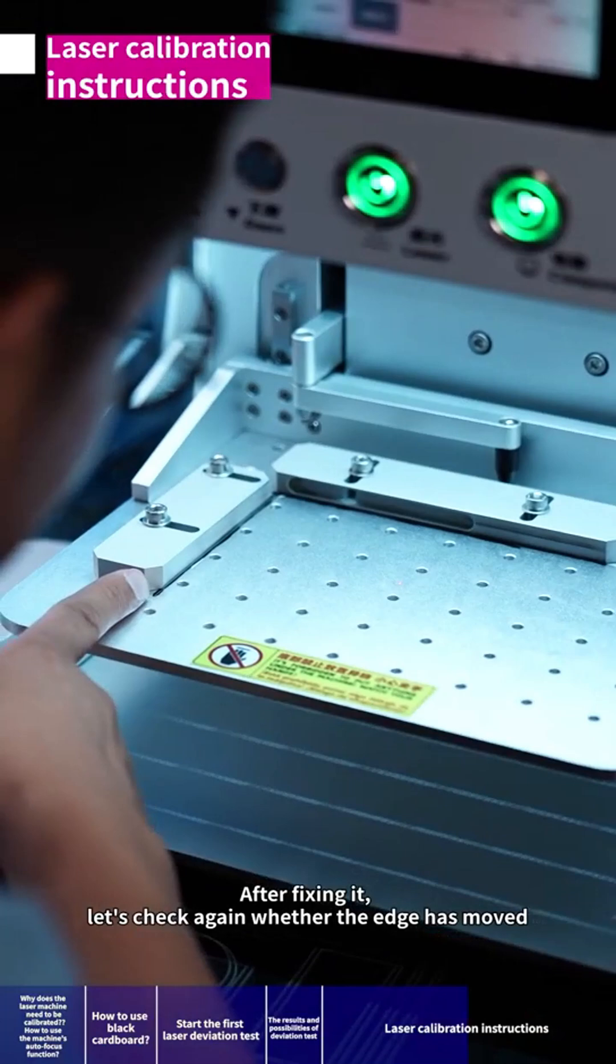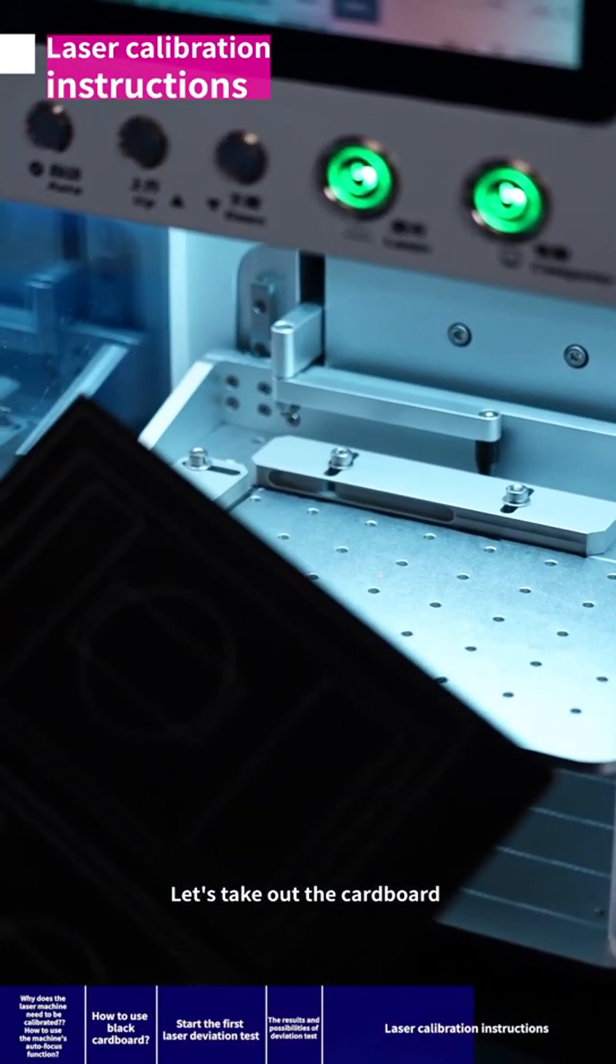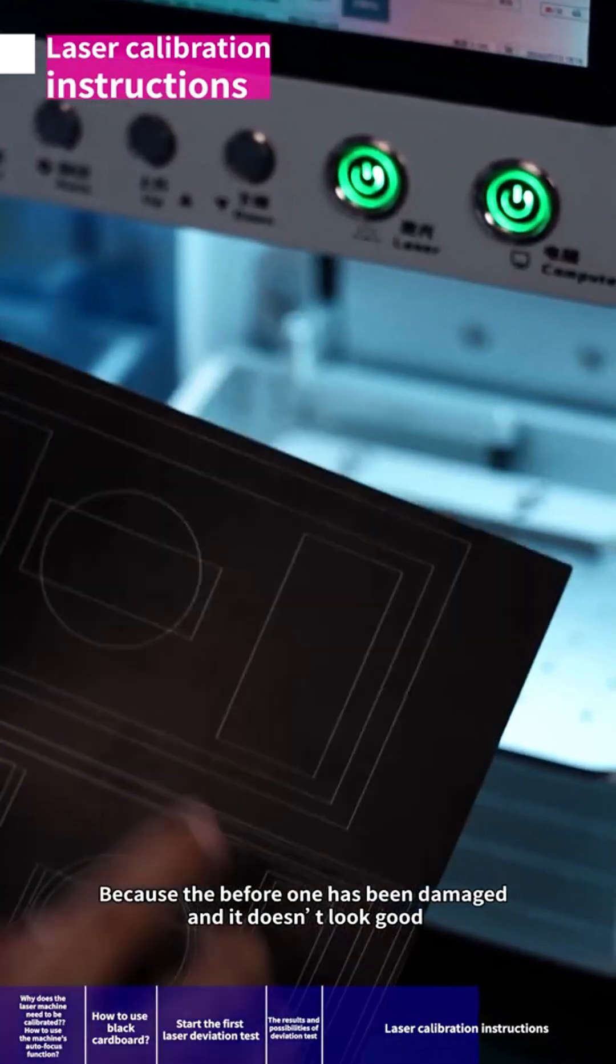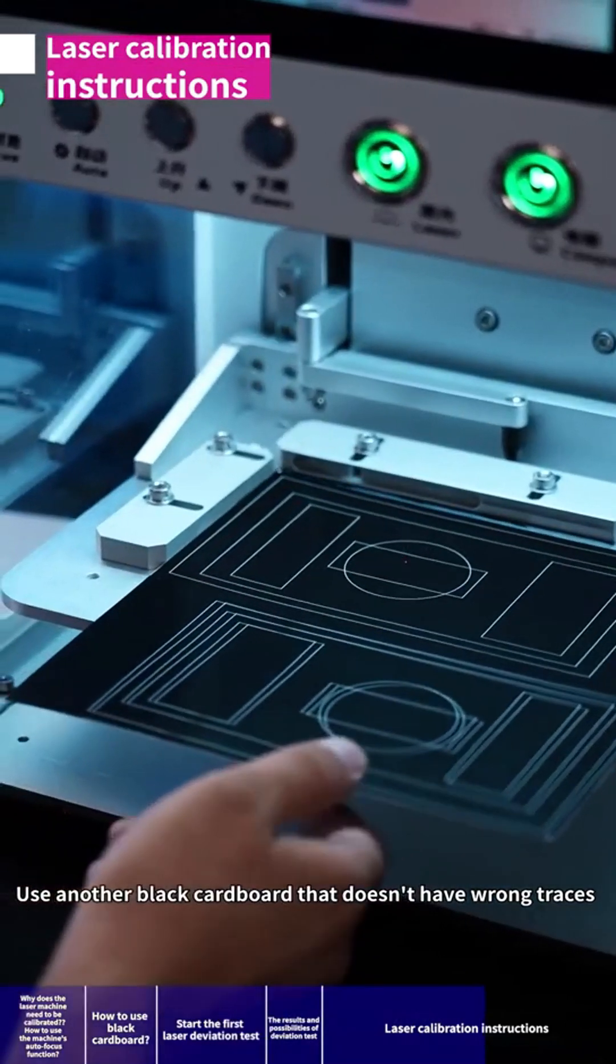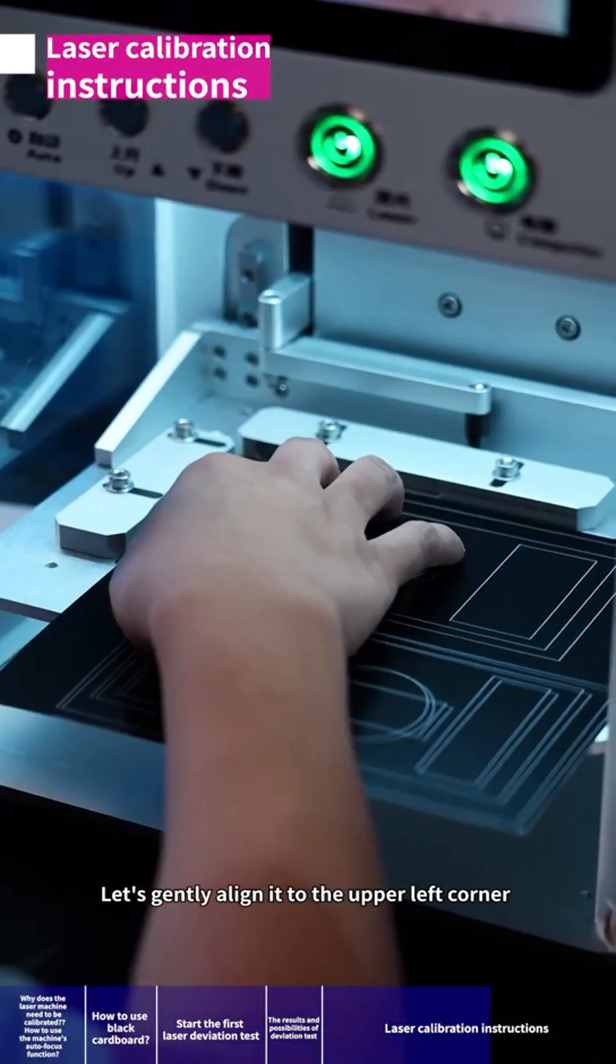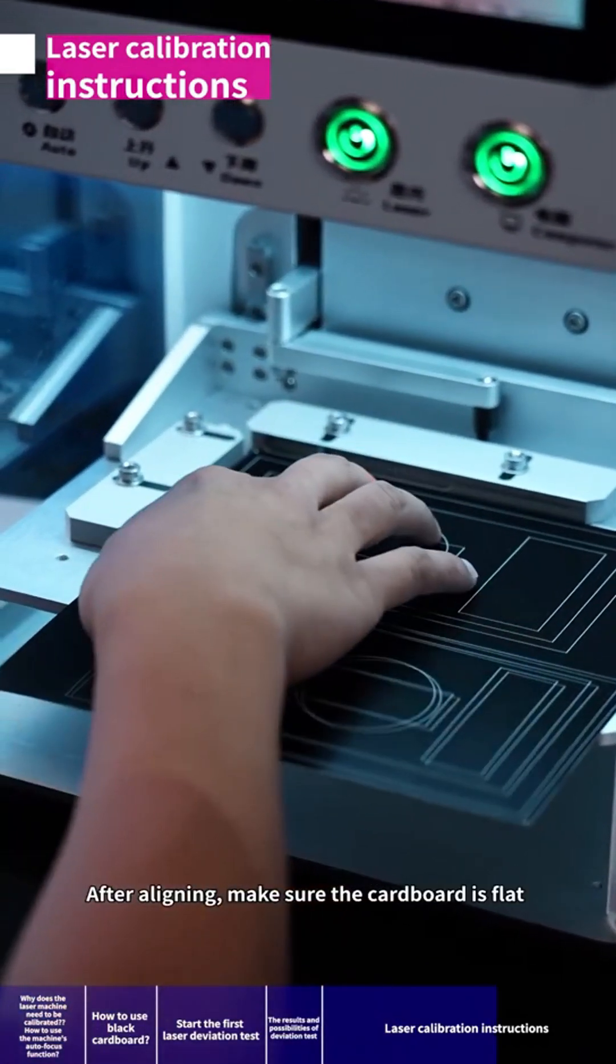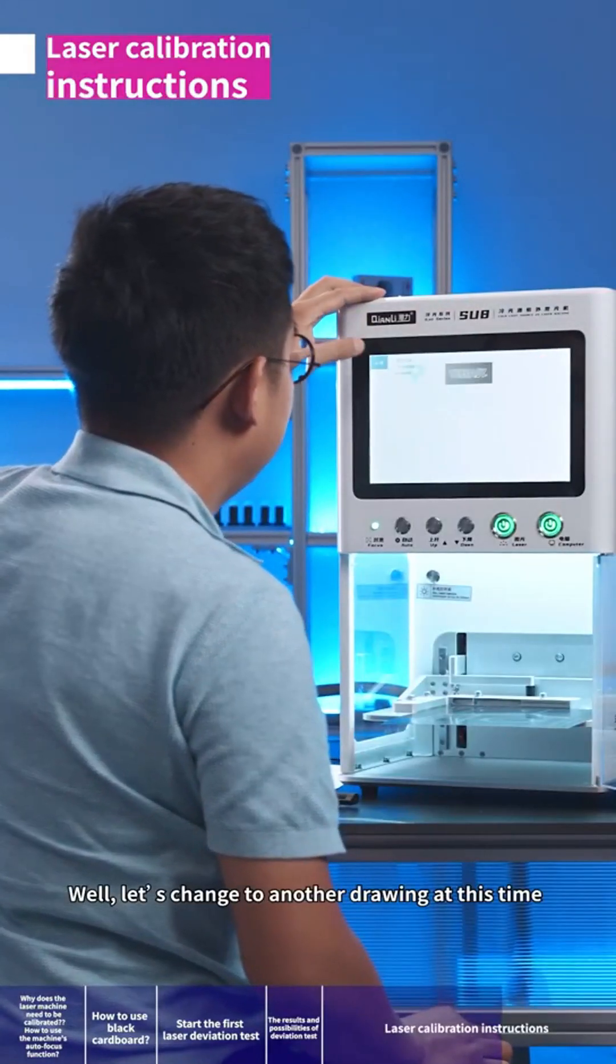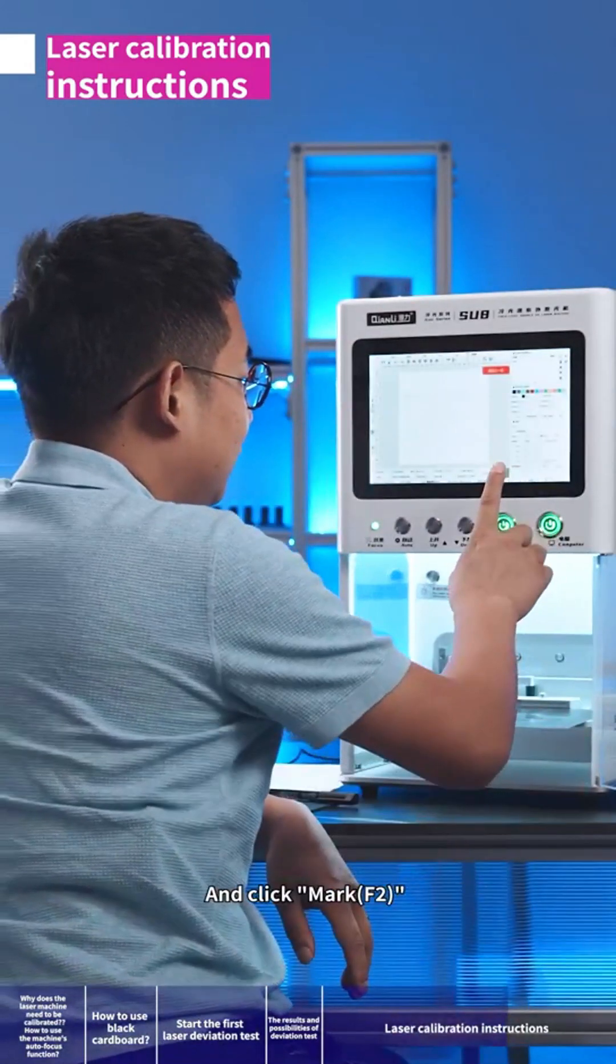After fixing it, let's check again whether the edge has moved. If no deviation, let's take out the cardboard. Now we should change to another cardboard because the before one has been damaged and doesn't look good. Use another black cardboard that doesn't have wrong traces. Then put it on. As the screw has not been tightened yet, let's gently align it to the upper left corner. After aligning, make sure the cardboard is flat. Well, let's change to another drawing at this time. Open the drawing we just used for the deviation test and click mark F2.